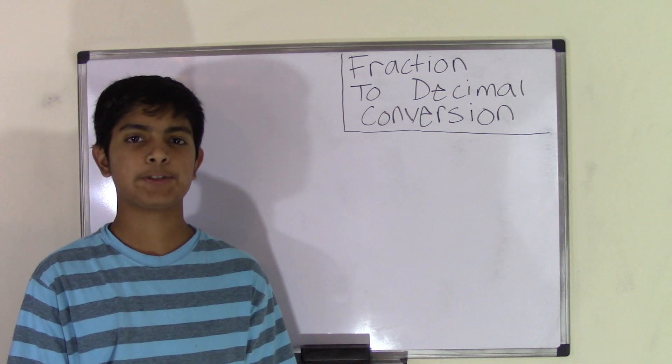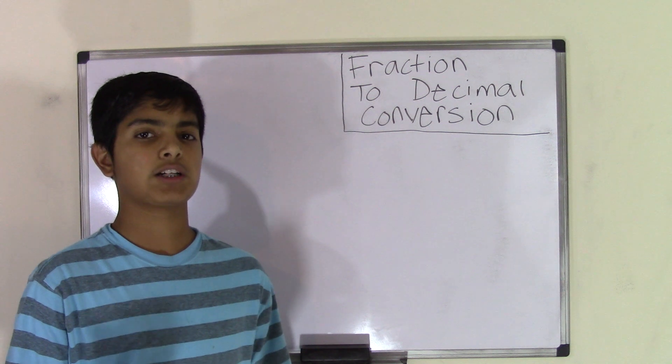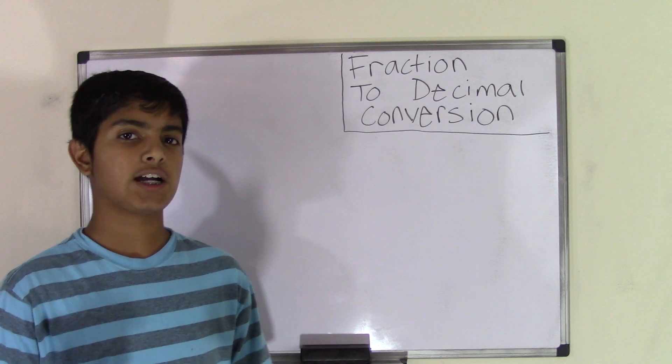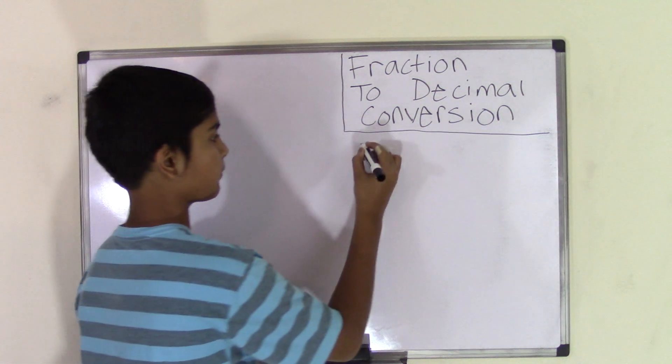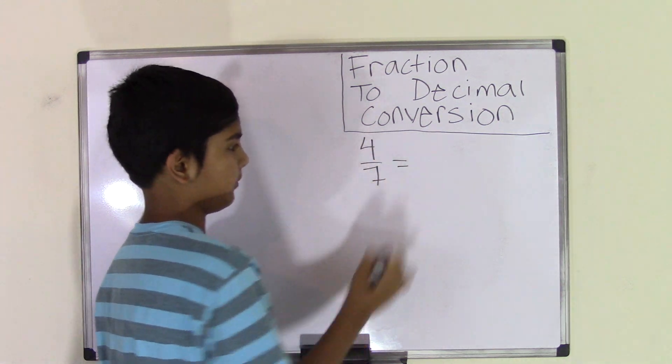Hey guys, welcome back to Bernice's Math Club. Today's topic is fraction to decimal conversion. So in this topic, I'll be talking about converting a fraction into a decimal number. So let's get started by taking the fraction 4 over 7, and what we need to do is make it into a decimal number.